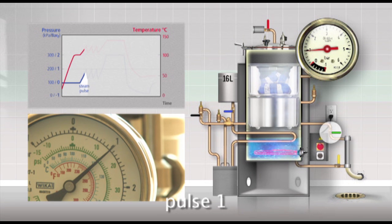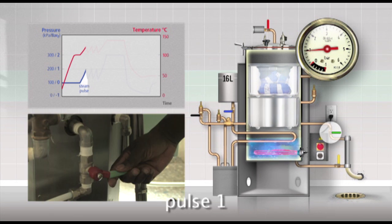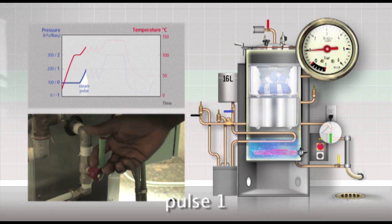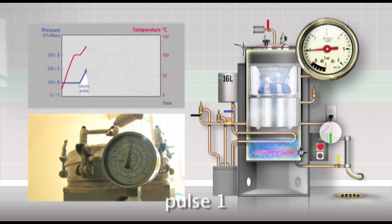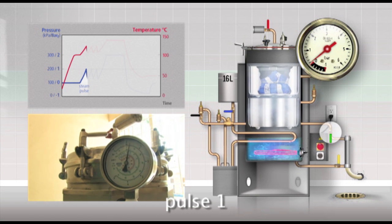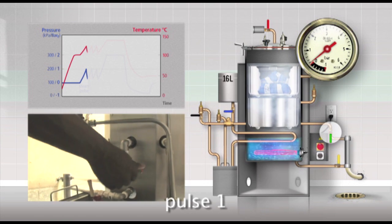When the pressure has built up to 1 bar, open the green valve, the pressure release valve. Let the pressure drop to 0.2 bar and then close the green valve.